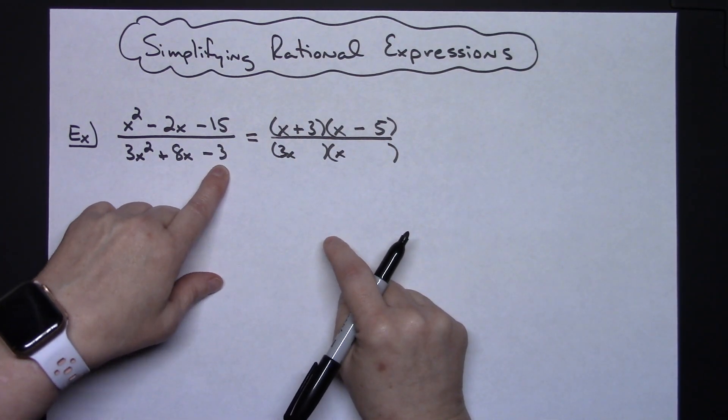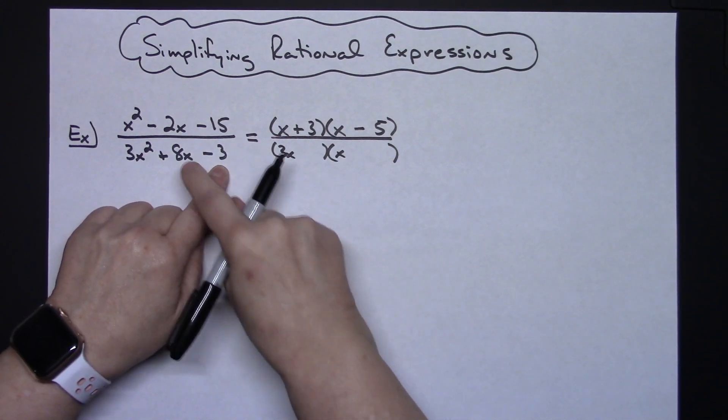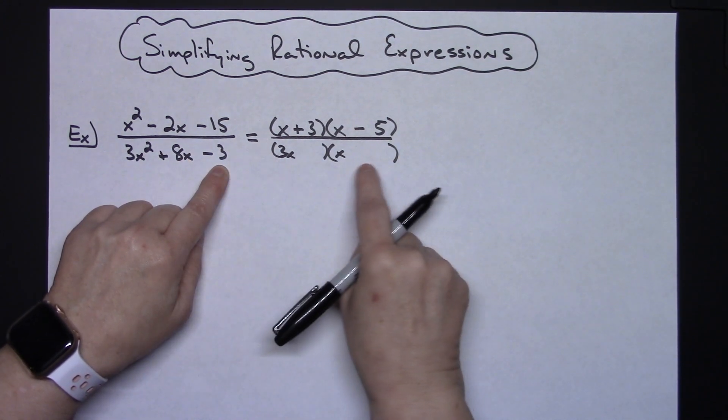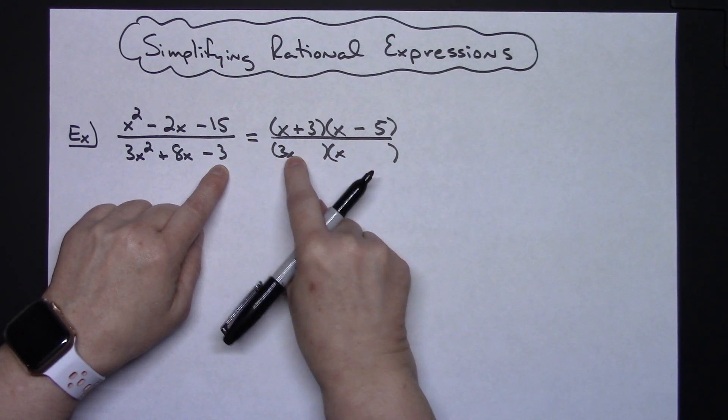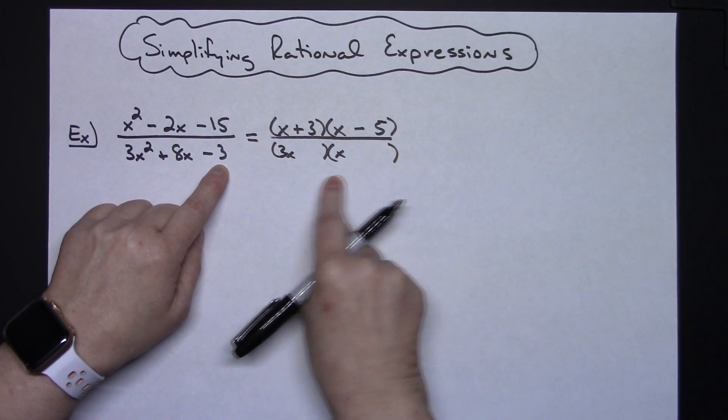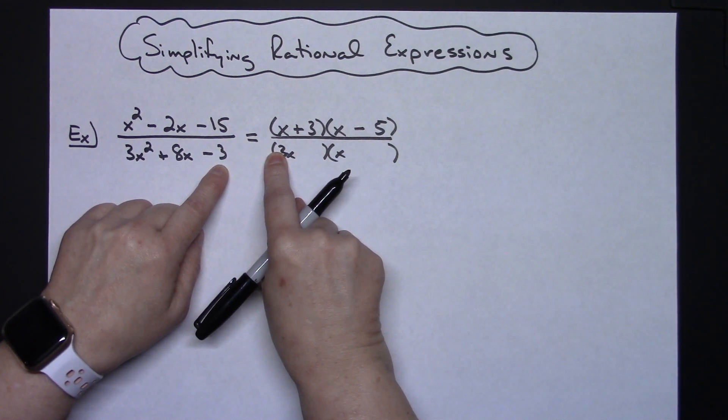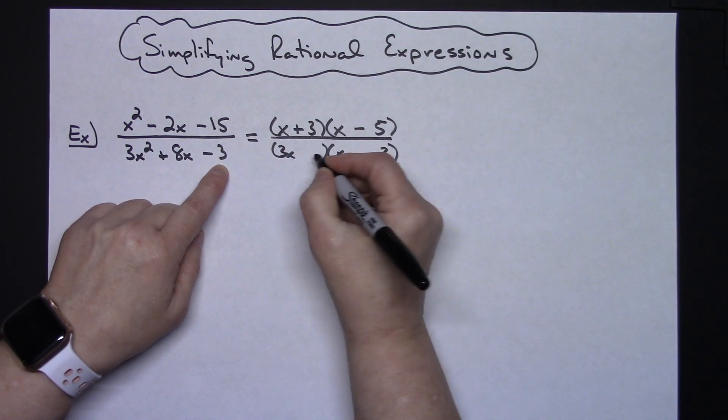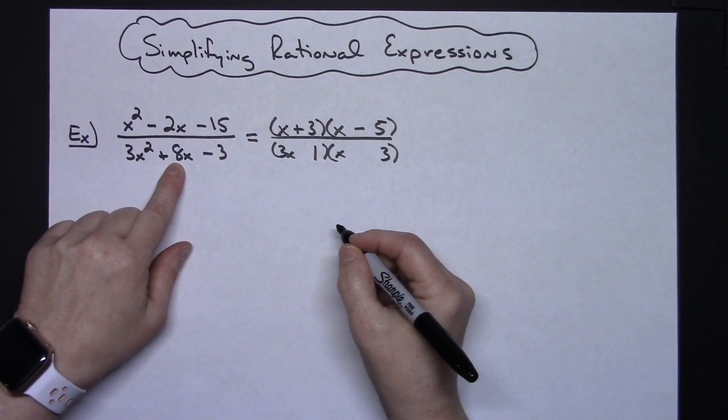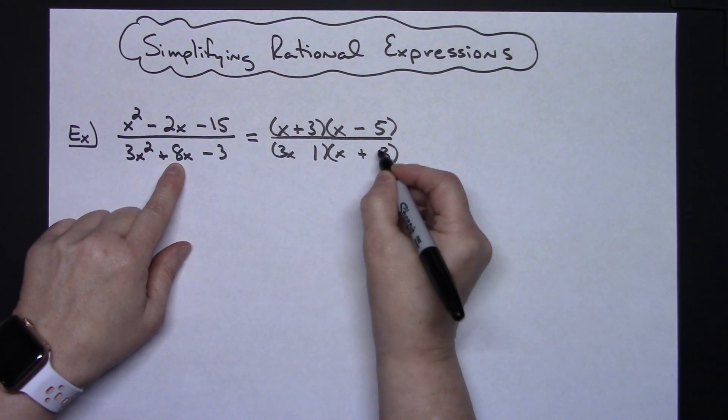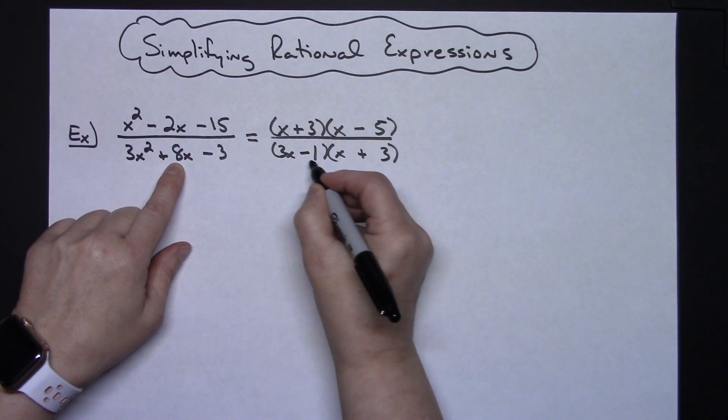Okay now I've got to have factors of 3 and I need an 8 in the middle. If I put a 3 here I would have 3 and 3 more is only going to give me a 6. If I put 3 here, 3 times 3 is going to give me a 9 so I think I'm going to put my 3 here and my 1 here and then I need a positive 8 in the middle so that 9's got to be positive and the 1's got to be negative.